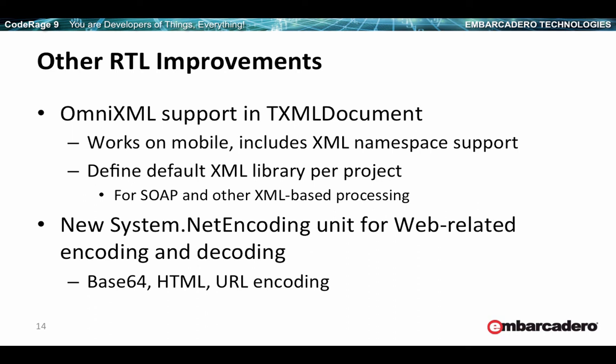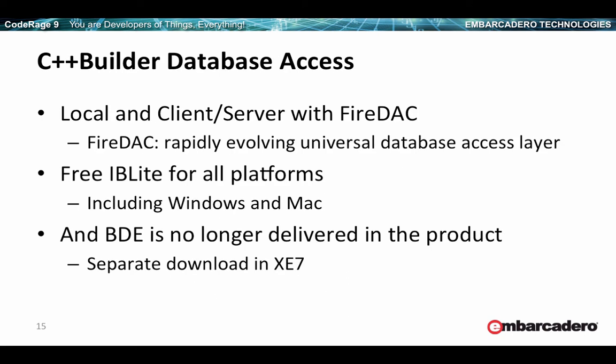On the RTL side, we've added additional XML support by supporting OmniXML, which works in mobile and supports XML namespaces. You can specify which XML library you want to use on a per-project basis. We also added a new System.Net.Encoding unit for web-related encoding and decoding, including Base64, HTML, and URL encoding. On the database access side, XE7 continues to deliver the best in FireDAC for local and client-server connectivity.